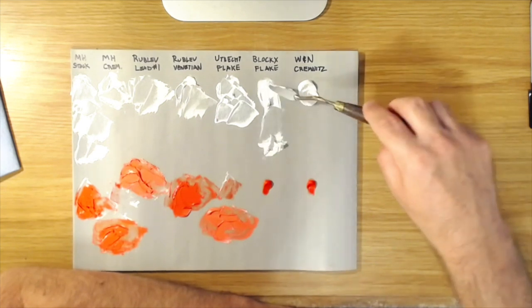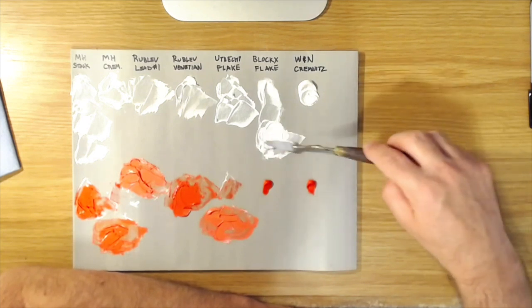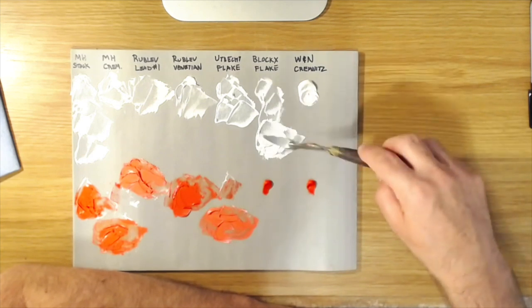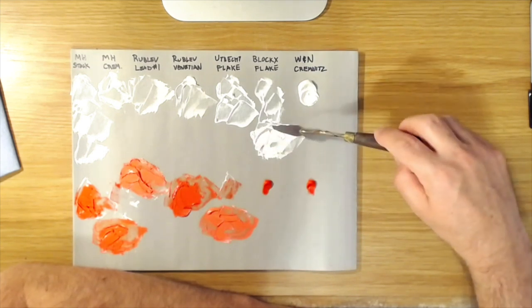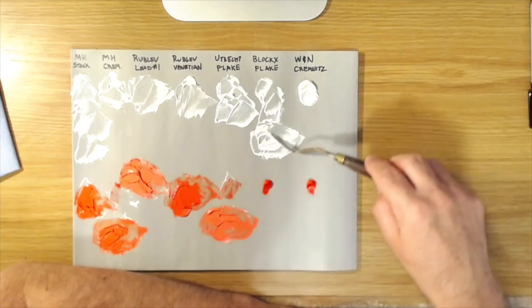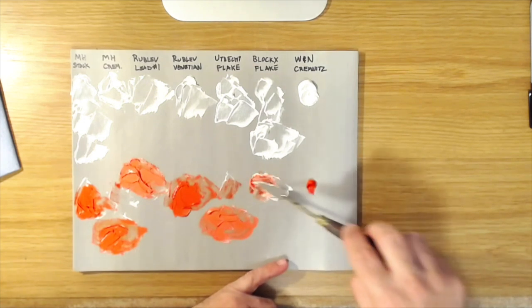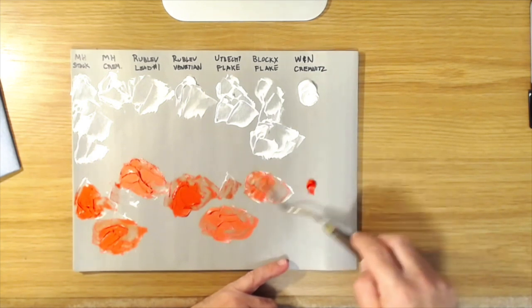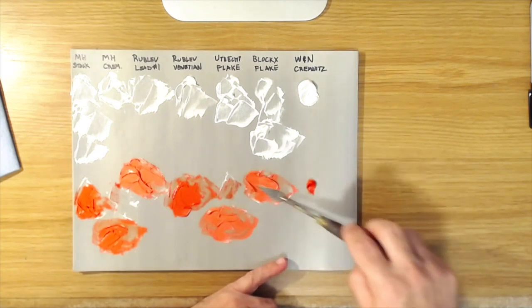Now the Blocks Flake White. Blocks makes great paints, they're very expensive in general, and this is probably the oiliest of all of them. It's definitely softer. So we'll see how this one tints out. Try to get the same amount there going. And again, this looks like it's a little bit of a cooler tint, the tints on the cooler side.